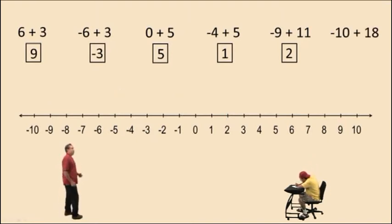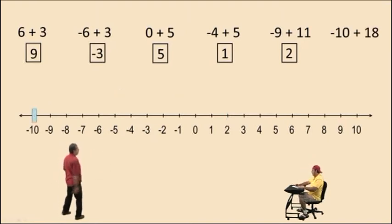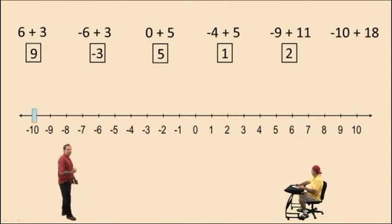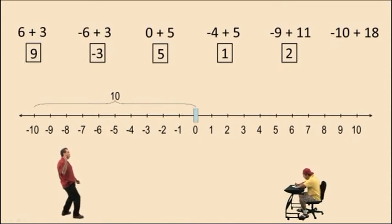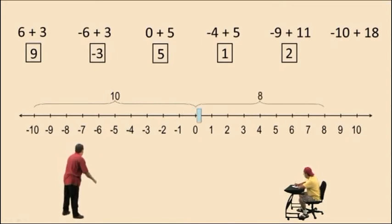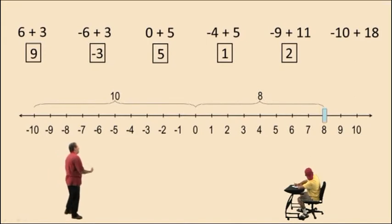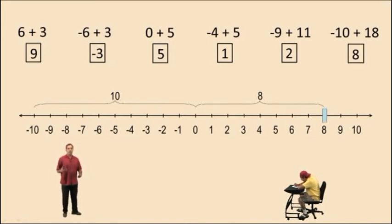How about negative 10 plus 18? We start over here at negative 10 and we're going to move all the way over 18 units. But from negative 10 to 0 is 10 units. We still have to move 8 more units, so let's go ahead and do that, and we end up at positive 8. So negative 10 plus 18 is positive 8.